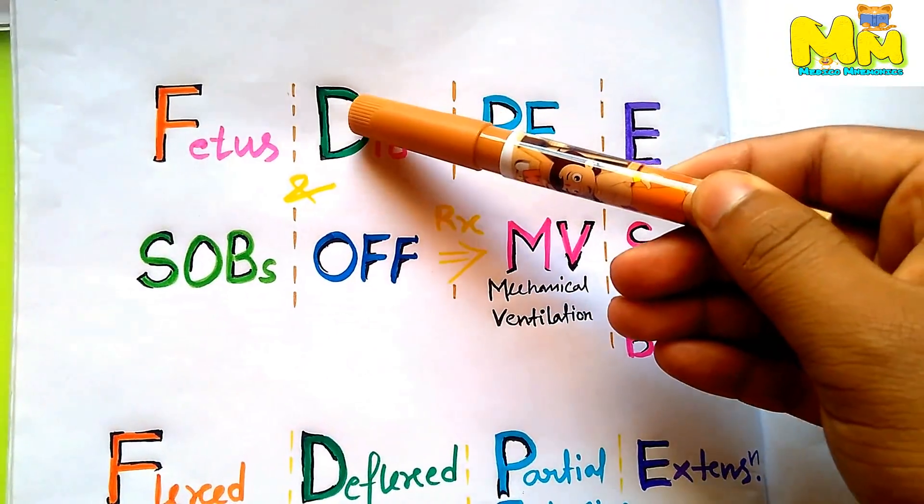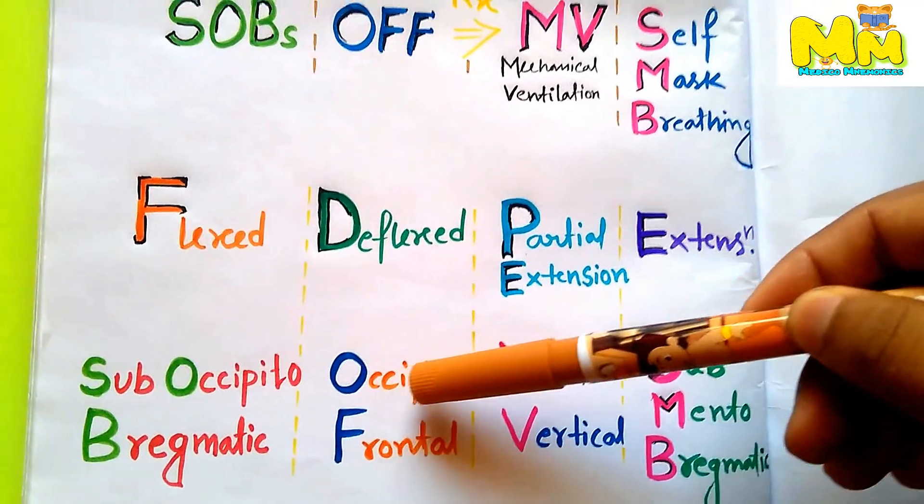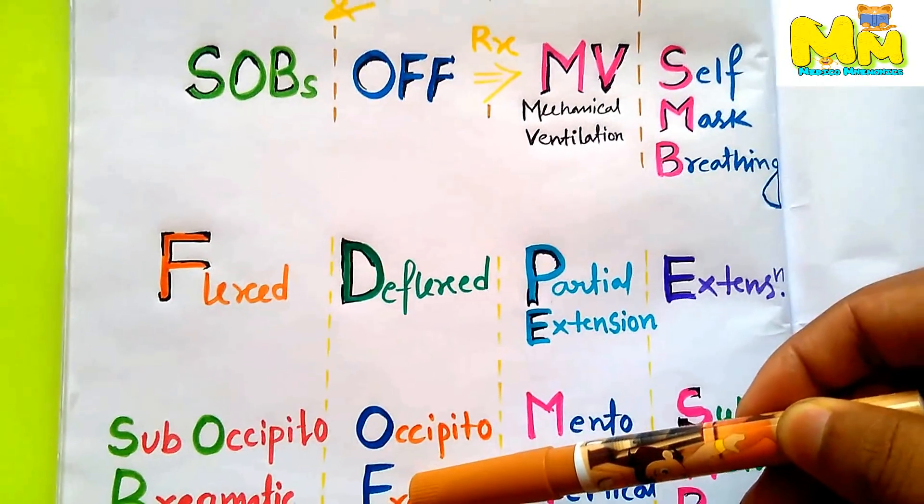D for deflexed head, and the engaging diameter is occipitofrontal, that is OFF corresponding to occipitofrontal.